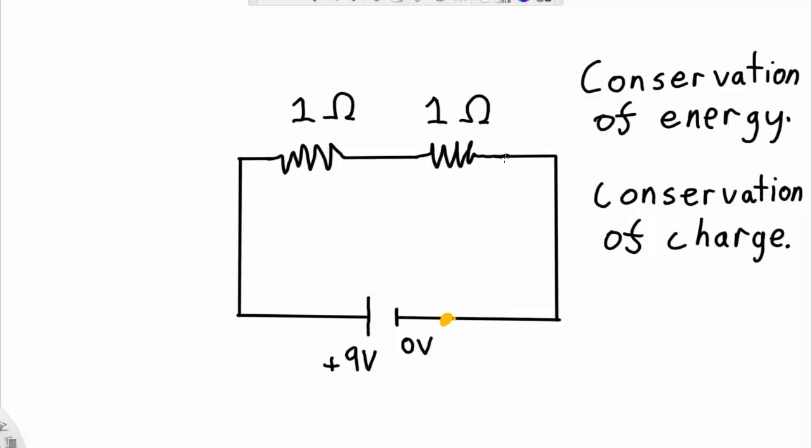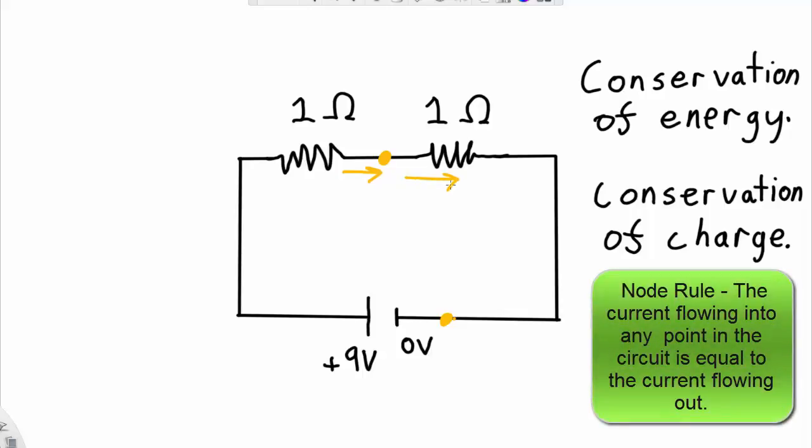What that means is if I have a particular point in the circuit, maybe let's choose this point here, then the amount of current that flows through this particular point in the circuit, the amount of current flowing into it, must be equal to the amount of current flowing out of it. So this is called the node rule.